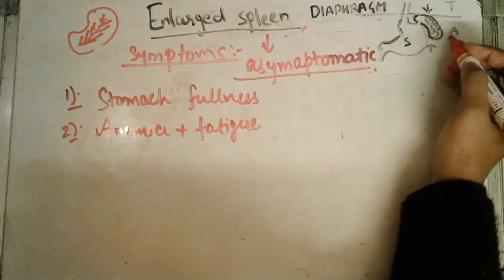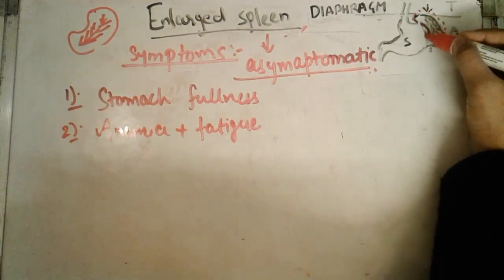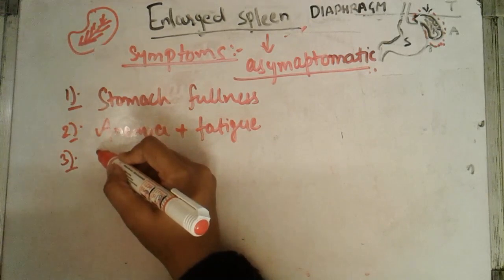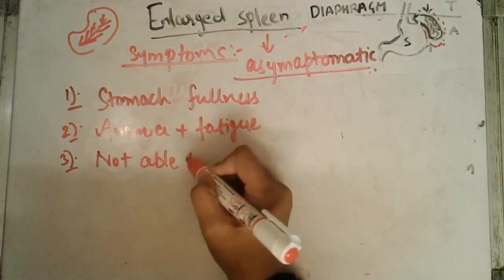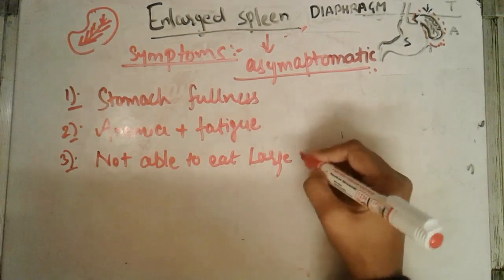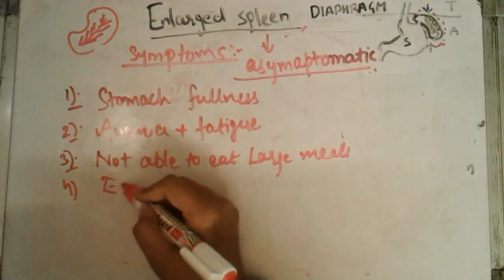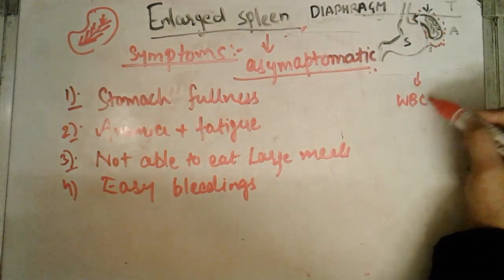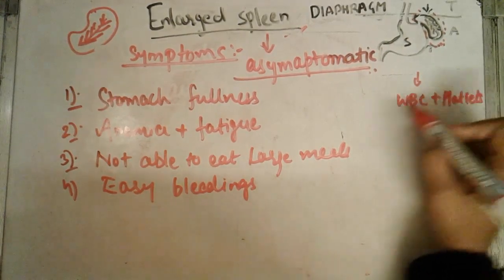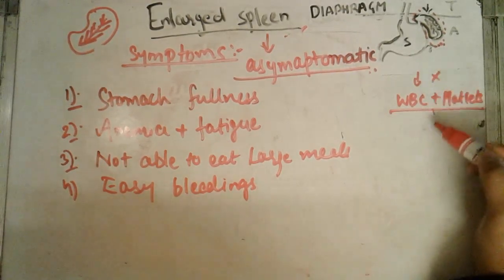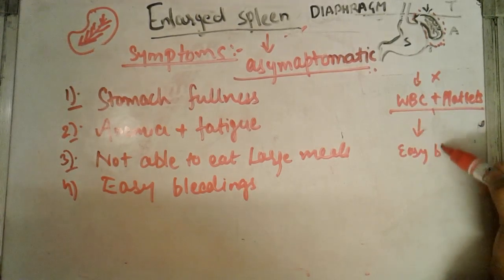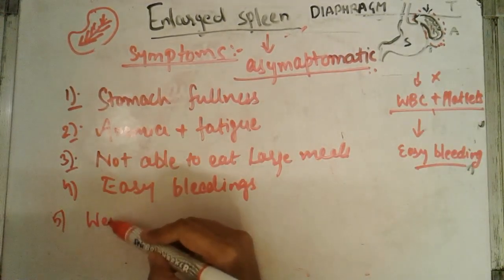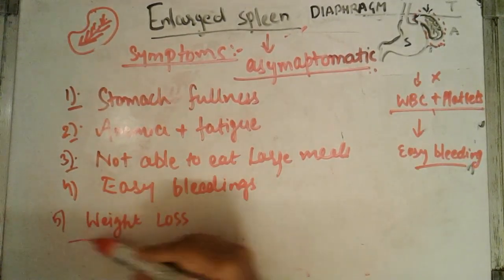Because the spleen is now impaired and not doing its proper function, the patient can suffer from anemia, and fatigue is usually associated with anemia. Another symptom is trouble eating large meals. Additionally, because the spleen is associated with WBCs and platelets — which act as our defense mechanism — easy bleeding can occur even upon small injuries, and it can be difficult to treat. Weight loss is also associated with enlarged spleen.